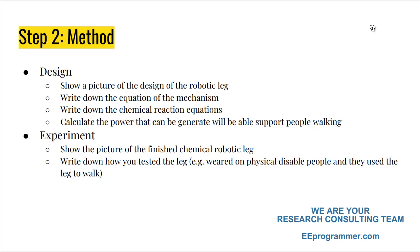Step 2: Method. This is separated into design and experiment. In the design part, you want to show a picture — like a CAD model of the robotic leg — showing how you conceptually designed it. You also need to write down the equations for the mechanism of the robotic leg to make sure it can support a human's weight, as well as the chemical reaction equation.